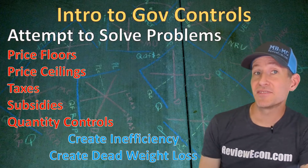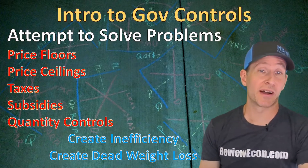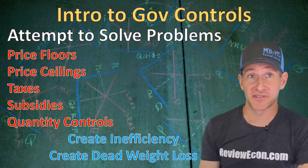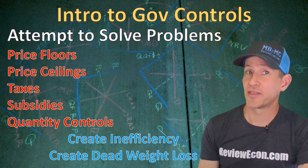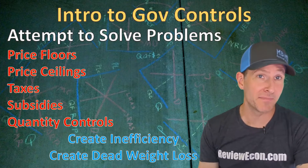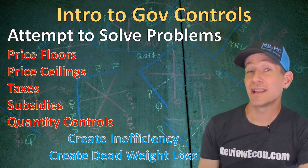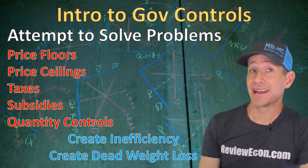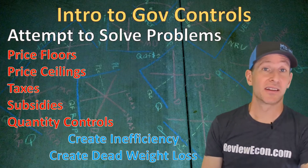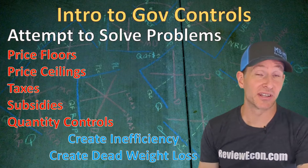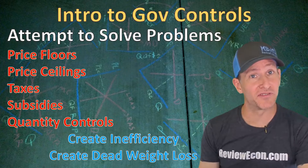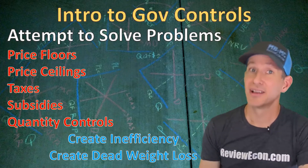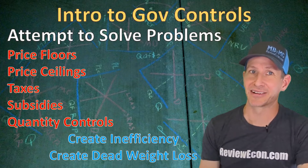In units 5 and 6 you're going to learn about government controls that can actually increase efficiency when there's monopoly power, monopsony power, or negative or positive externalities. In those cases, government intervention can actually increase efficiency and reduce deadweight loss. But you'll learn that later.